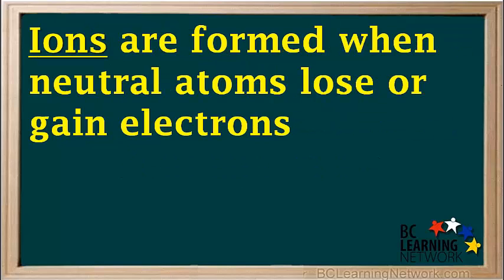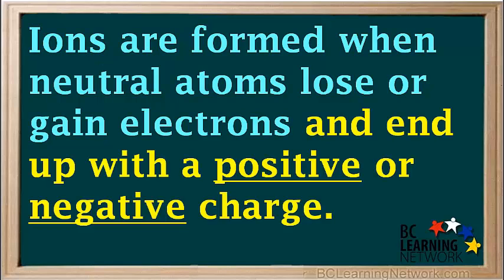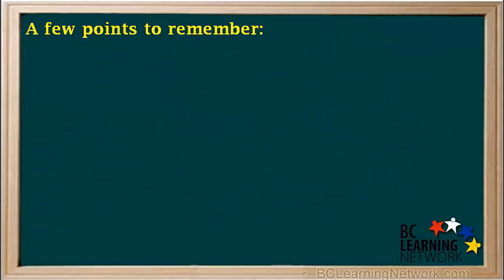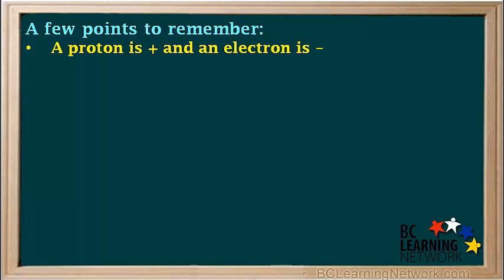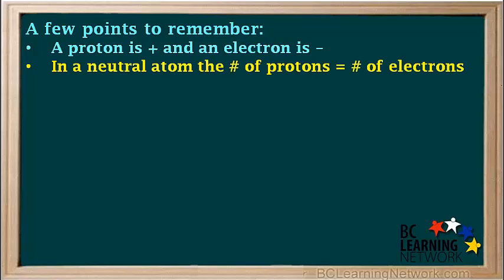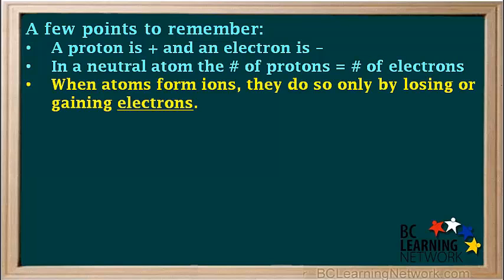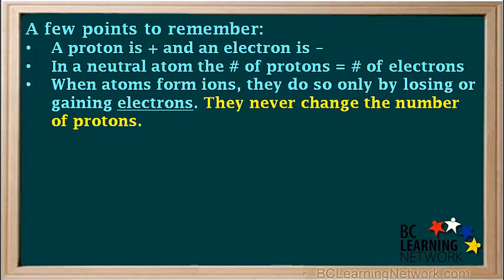Ions are formed when neutral atoms lose or gain electrons and end up with a positive or negative charge. Here are a few points to remember about ions. A proton is positive and an electron is negative. In a neutral atom, the number of protons is equal to the number of electrons. When atoms form ions, they do so only by losing or gaining electrons — they never change the number of protons, as this would change the identity of the element.